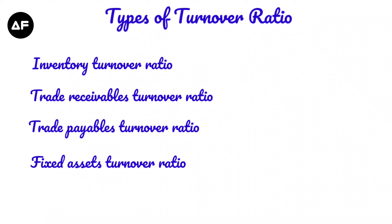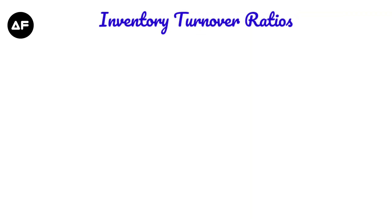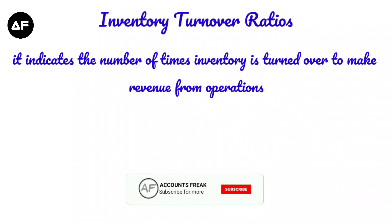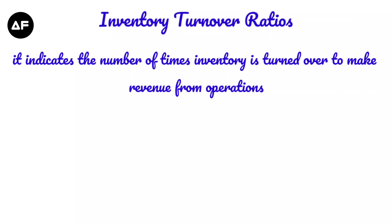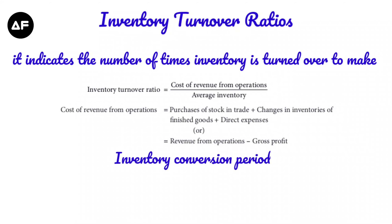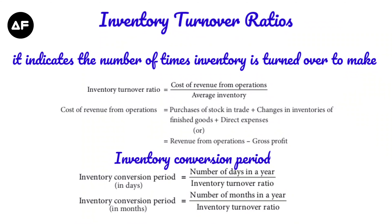First, let's see what inventory turnover ratio is. Inventory, or stock, shows how stock is being used to generate sales. The formula for inventory turnover ratio is cost of revenue from operations divided by average inventory. Average inventory is opening stock plus closing stock divided by two.